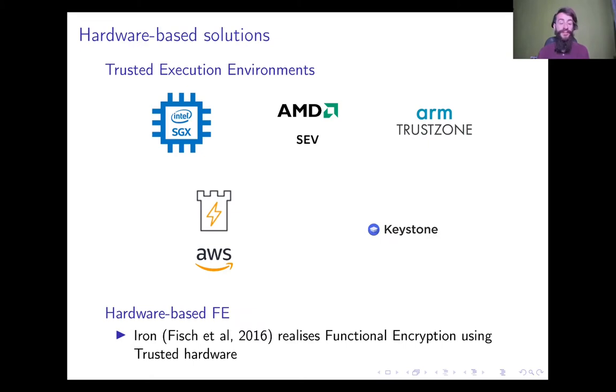A potential solution to these issues is that of using trusted execution environments. These are modern extensions to CPU architectures that increase the security properties on the host. In particular, this is a good fit, as in 2016, Fisch et al. realized a functional encryption protocol using trusted hardware.